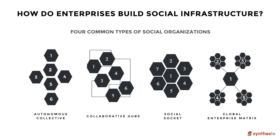We've got four common types of social organizations: first, the autonomous collective; second, the collaborative hub; third, the social socket; and fourth, the global enterprise matrix.